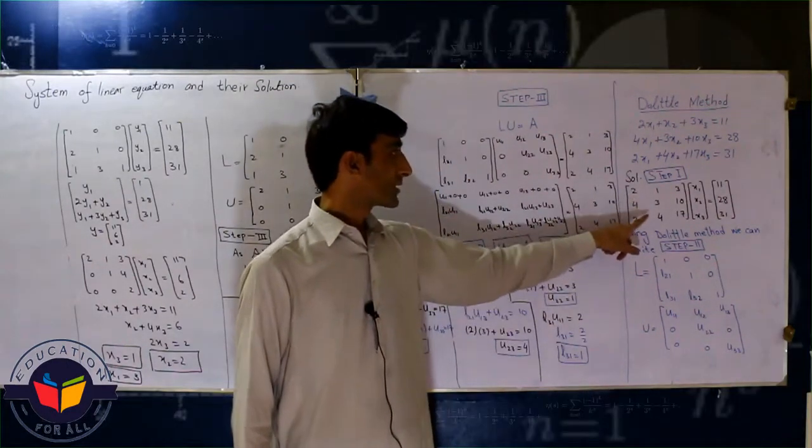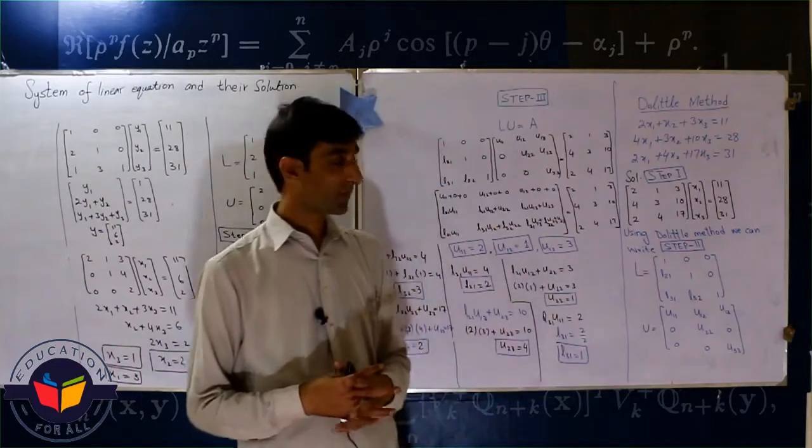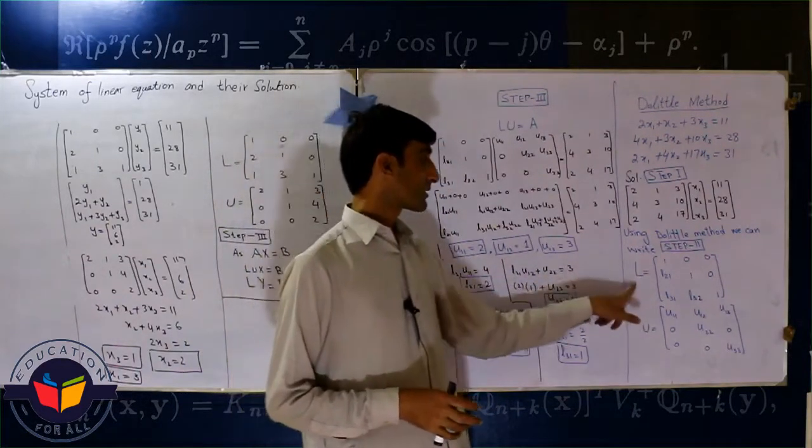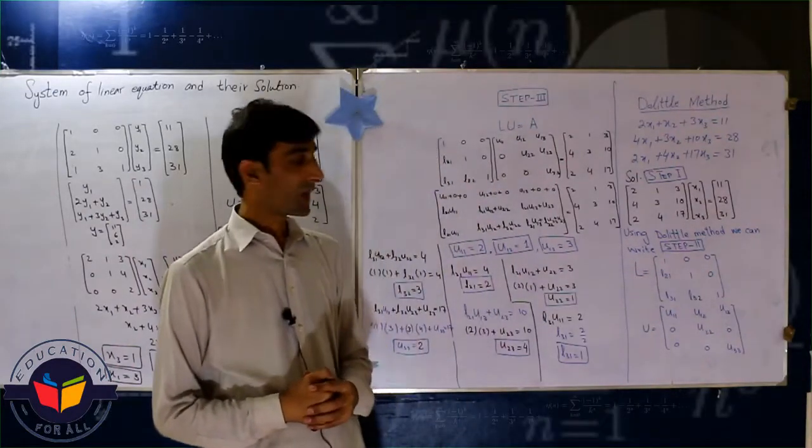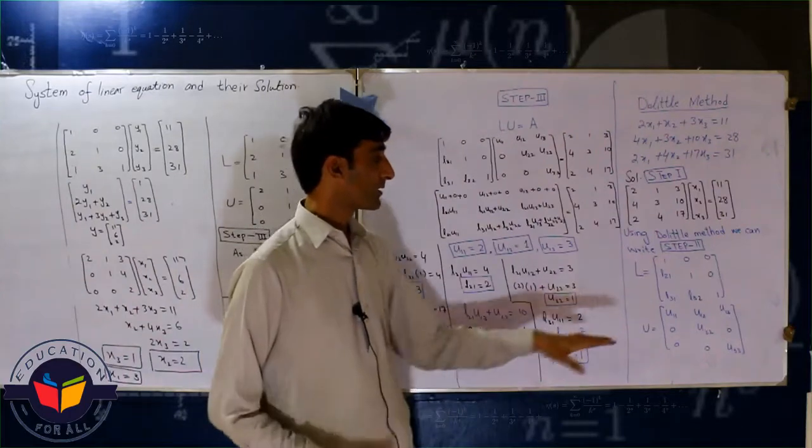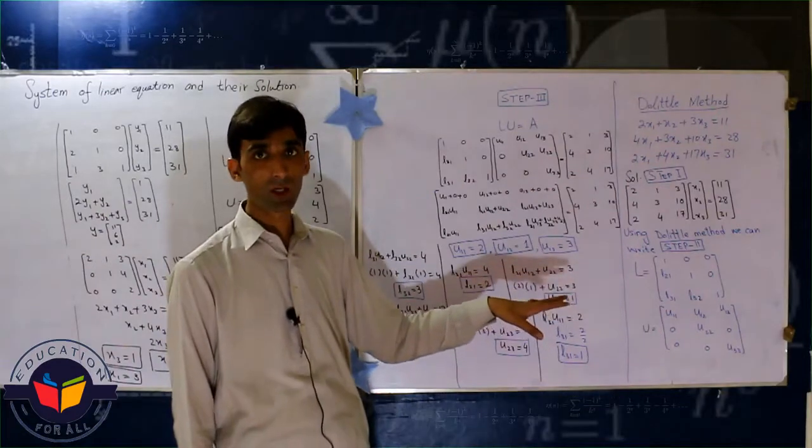That is lower and upper triangle. In lower triangle the diagonal is one, one, and one. And in upper triangle we write this one in this form. This is only in the case when we study Doolittle method.